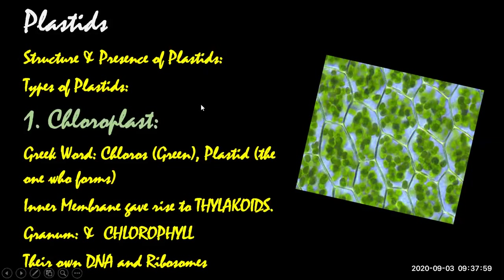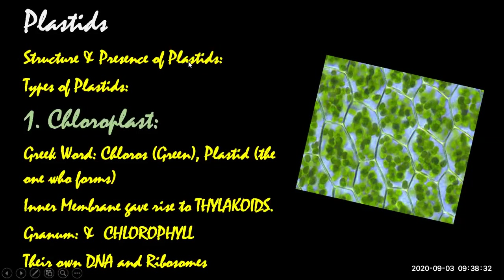There are no plastids in animals. There are also photosynthetic bacteria called cyanobacteria, but cyanobacteria does not have plastids. Remember — because bacteria do not have organelles. So even though cyanobacteria is photosynthetic, there are no plastids in it. Plants and algae have plastids; bacteria do not have chloroplasts.